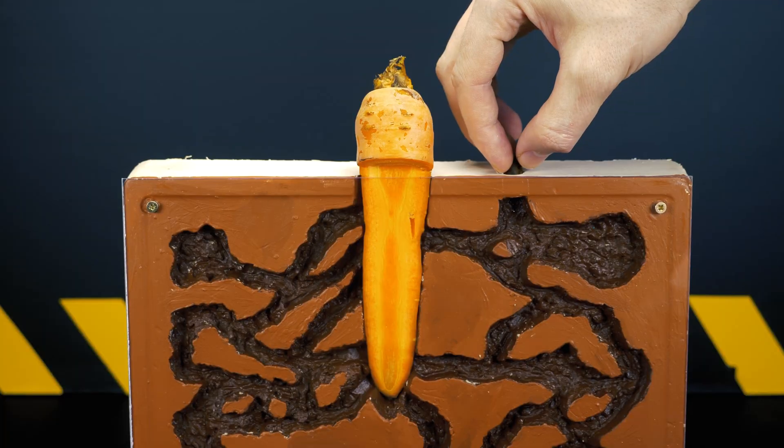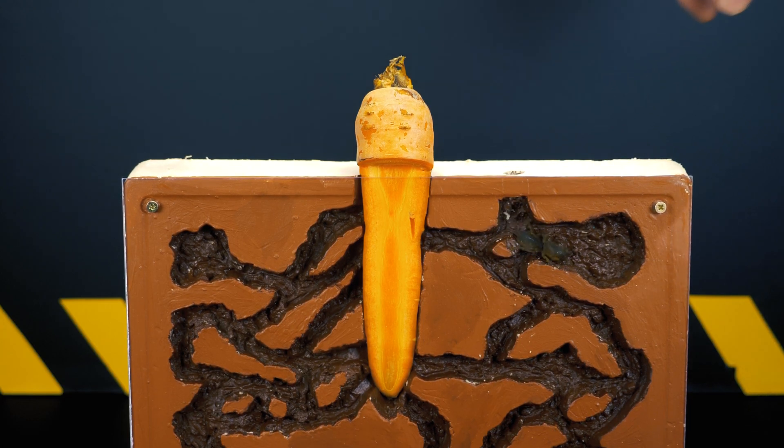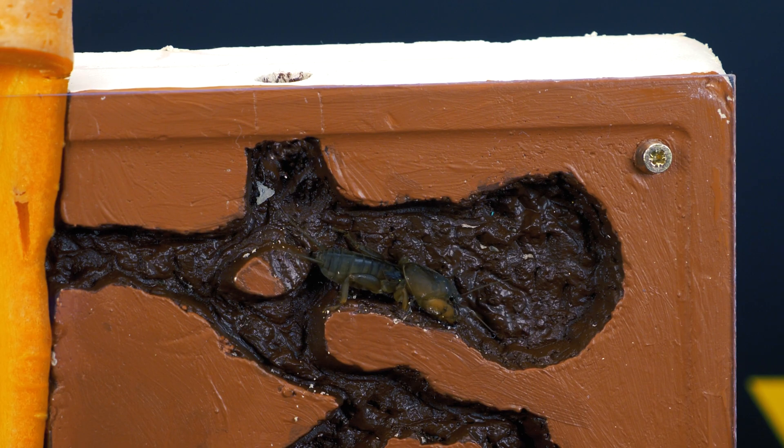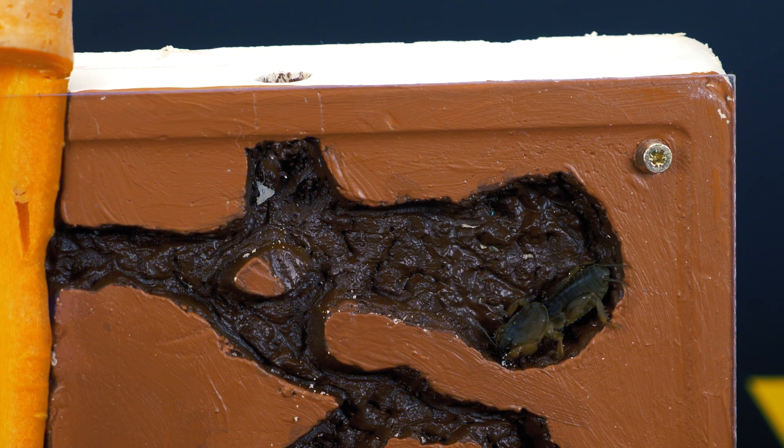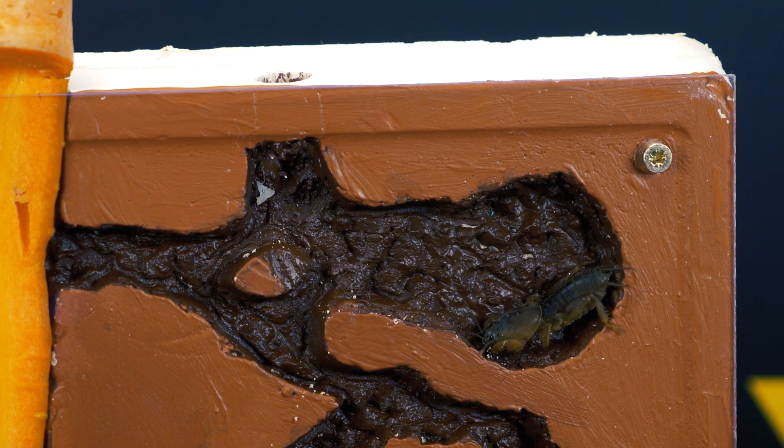Then I inserted a section of carrot into the terrarium. I think it looks even more interesting that way, and covered it all with transparent plexiglass.